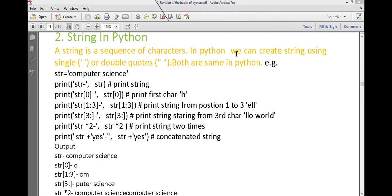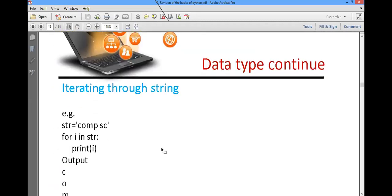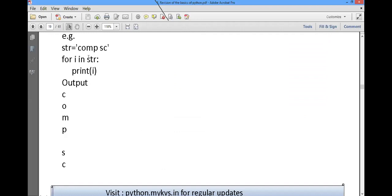Today what did we learn? This kind of questions will be asked. STR equal to computer science. For I in STR, print I. What did we get? I value is every single character at a time is taken. So C then O, M, P, U, T, E, R, then space, then S, C, I, E, N, C, E, because here termination is not given. Termination by space, end equal to space, nothing is mentioned. So automatically it will come in the next line. You people were asking to get it in the next line. Got it? So these kind of questions I will be giving you.